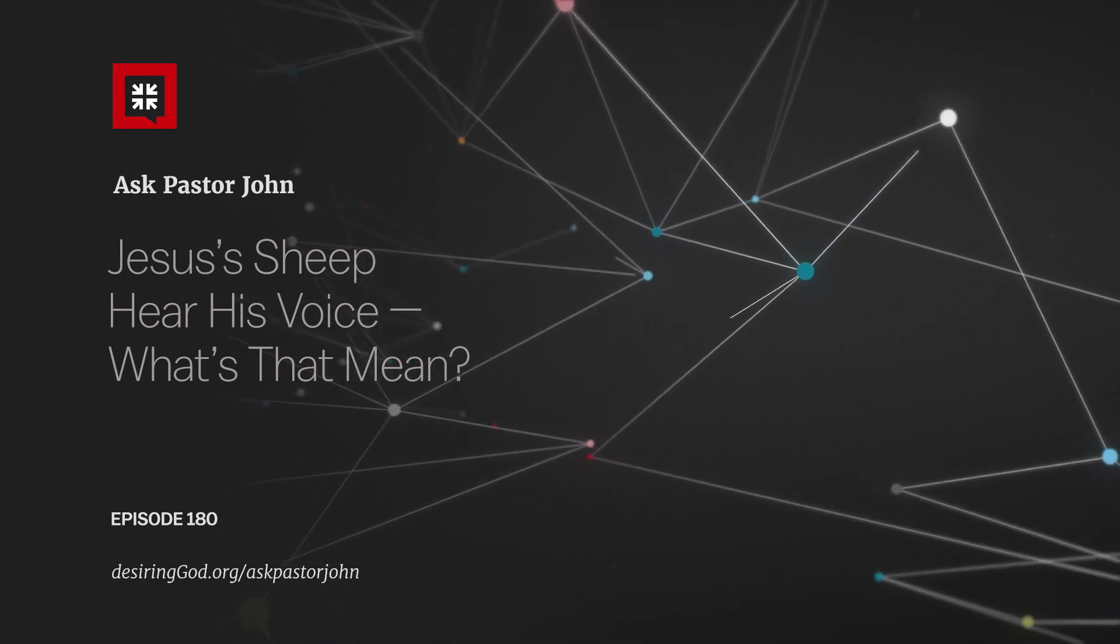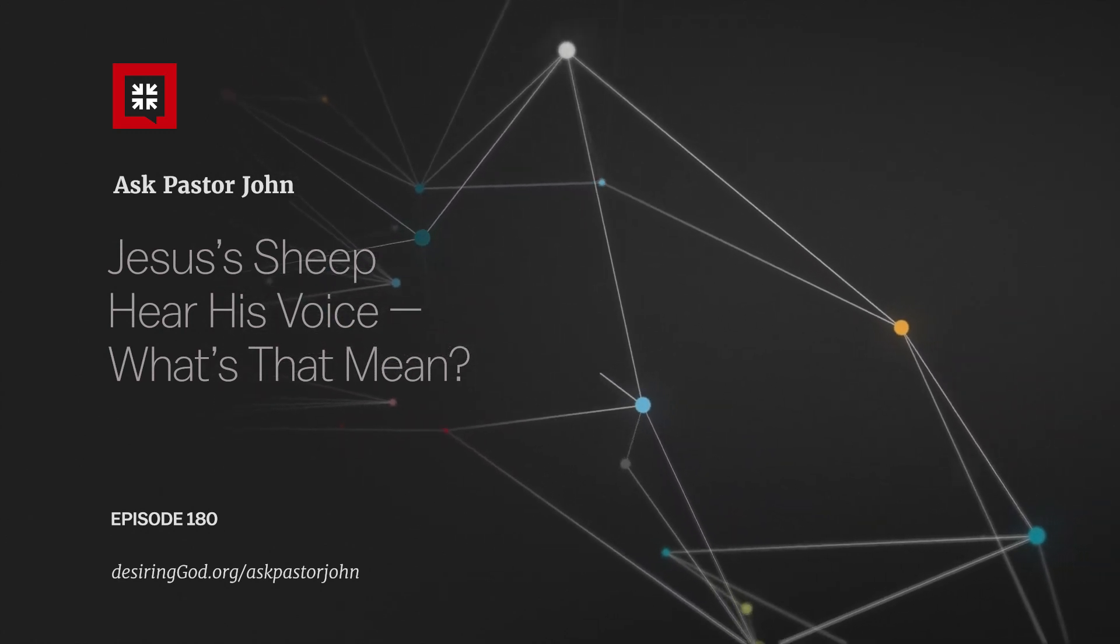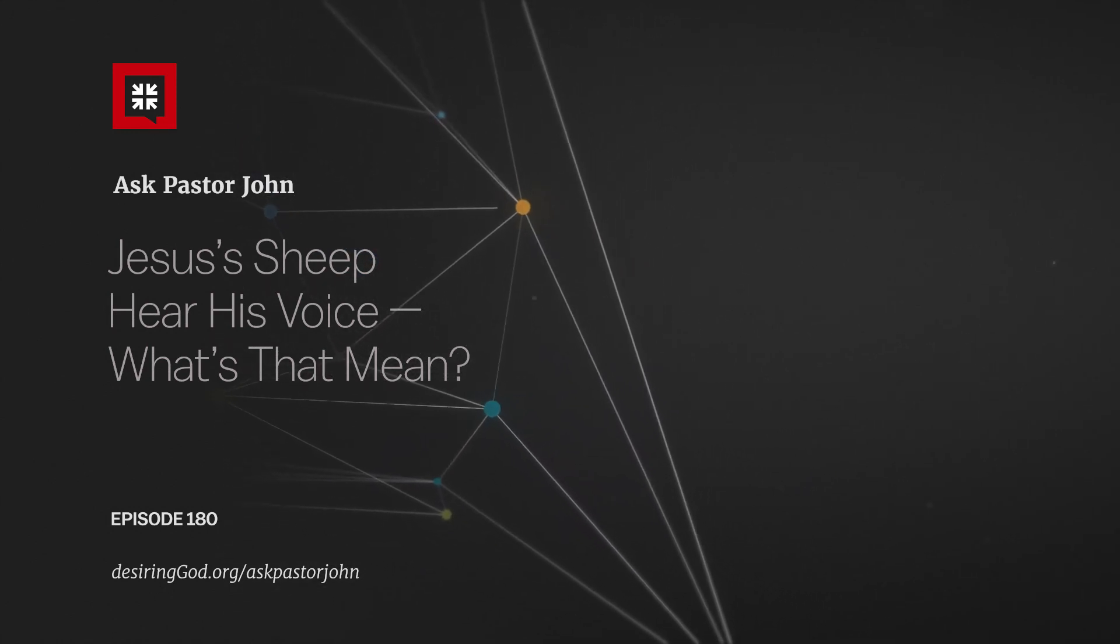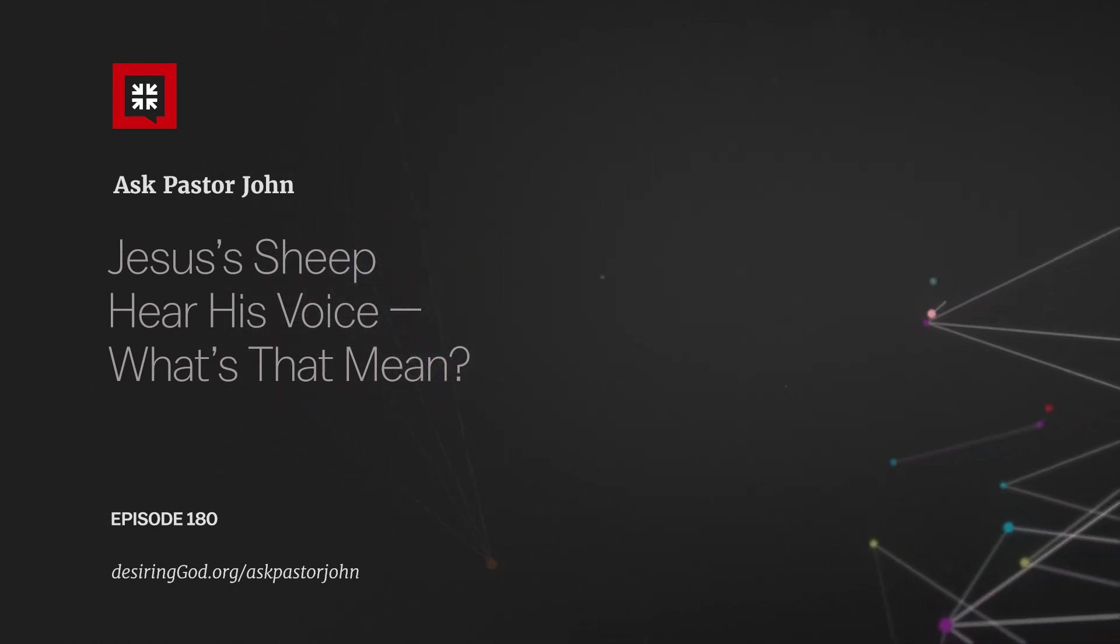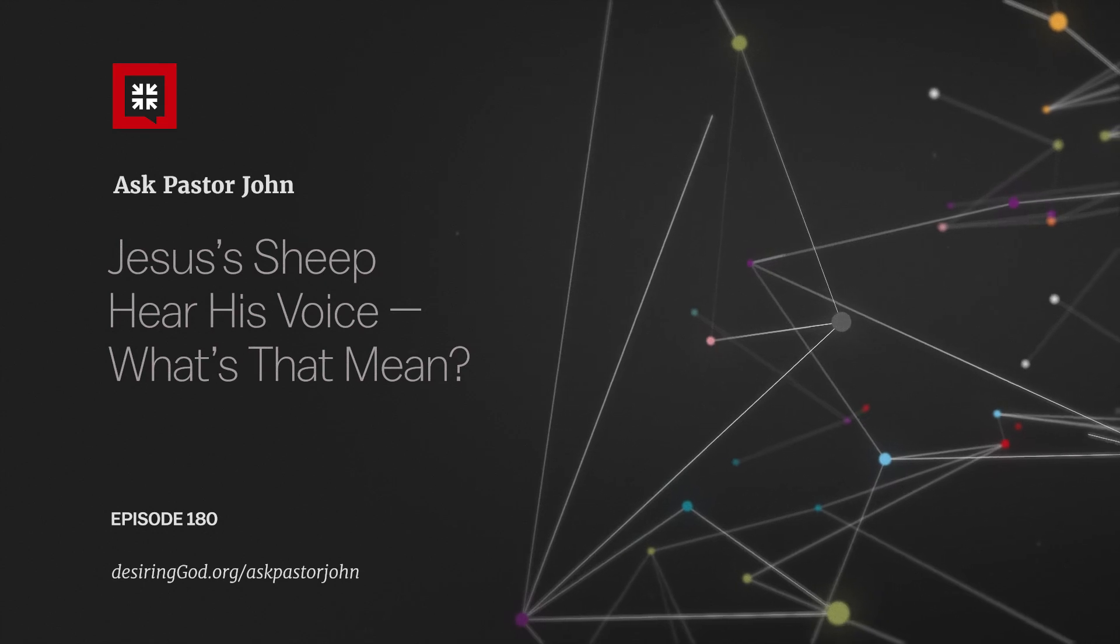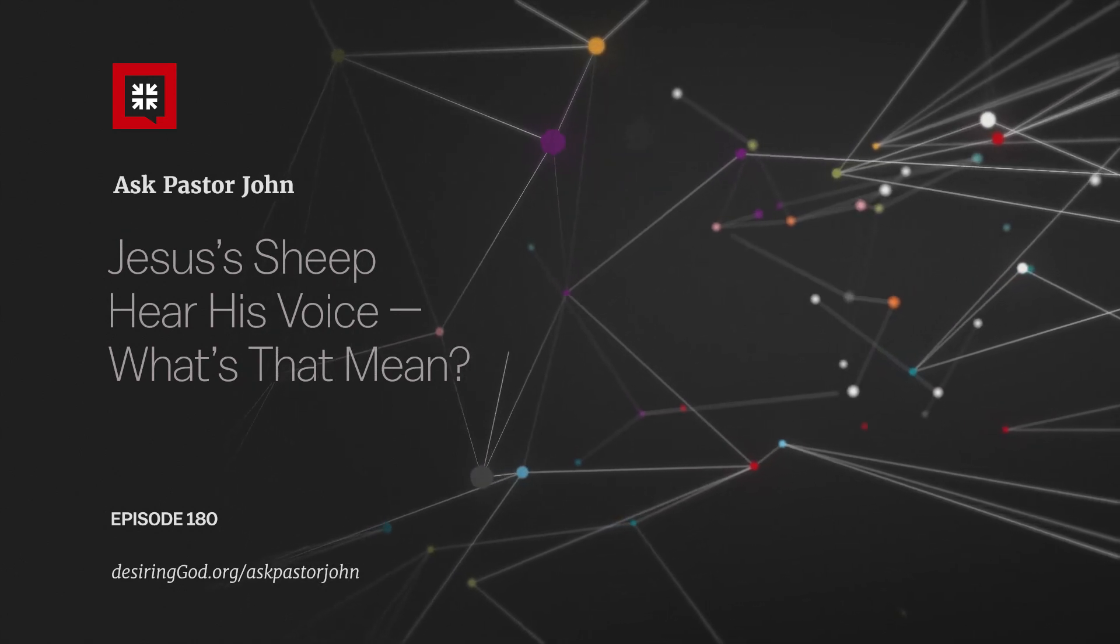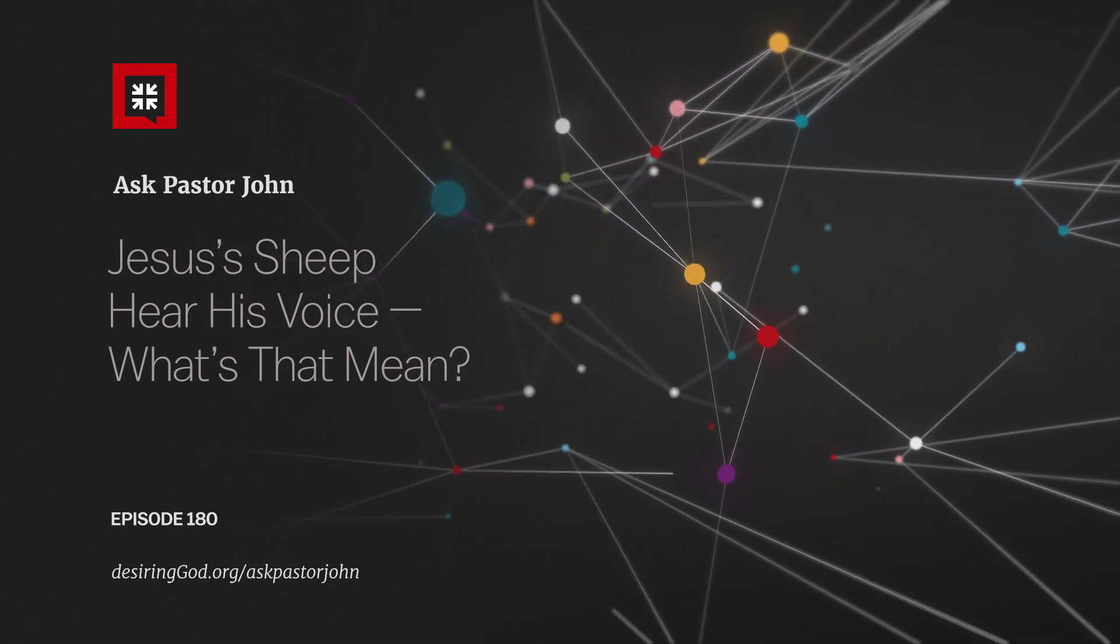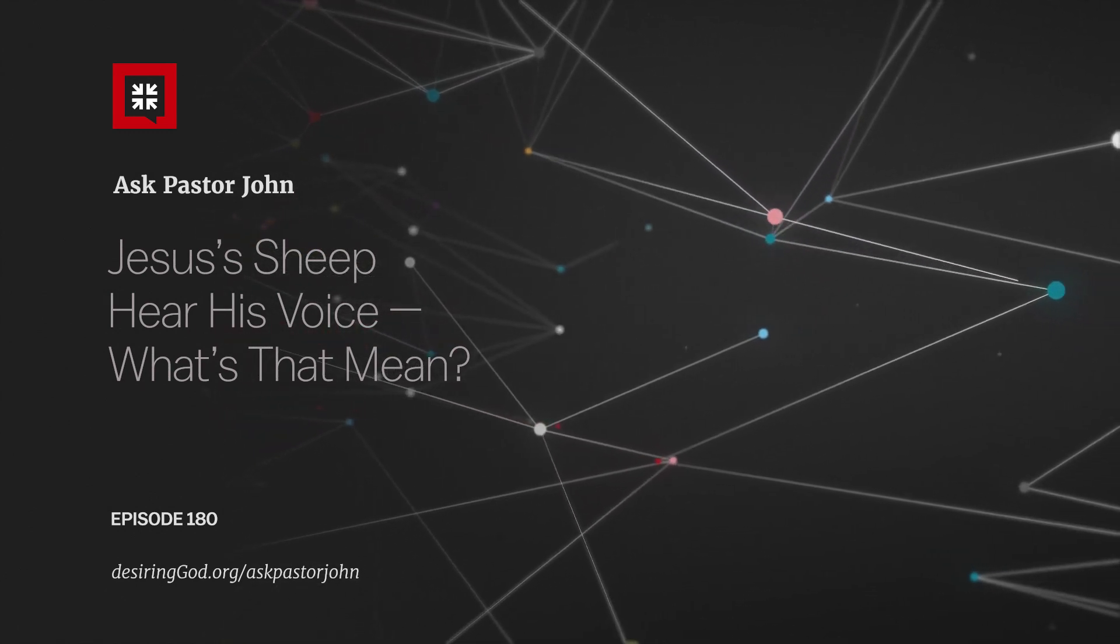is verse 6 of 2 Corinthians 4: 'God who said let light shine out of darkness has shown in our hearts to give the light of the knowledge of the glory of God in the face of Christ.' And we could just use the other metaphor of not seeing but hearing. God has shouted into our hearts and taken away our deafness and caused us to hear in the gospel the voice of the risen living Christ. So God opens the eyes of the heart. He opens the ears of the heart so that the beautiful glory of Christ is seen and the beautiful voice of Jesus is heard.